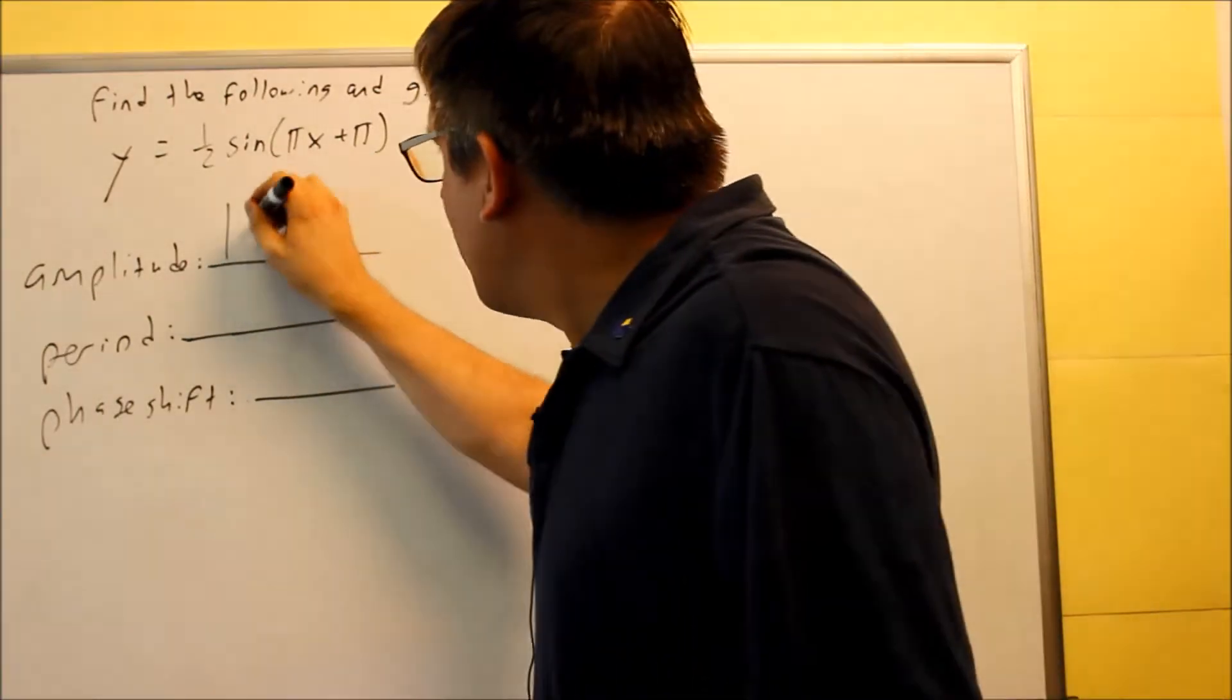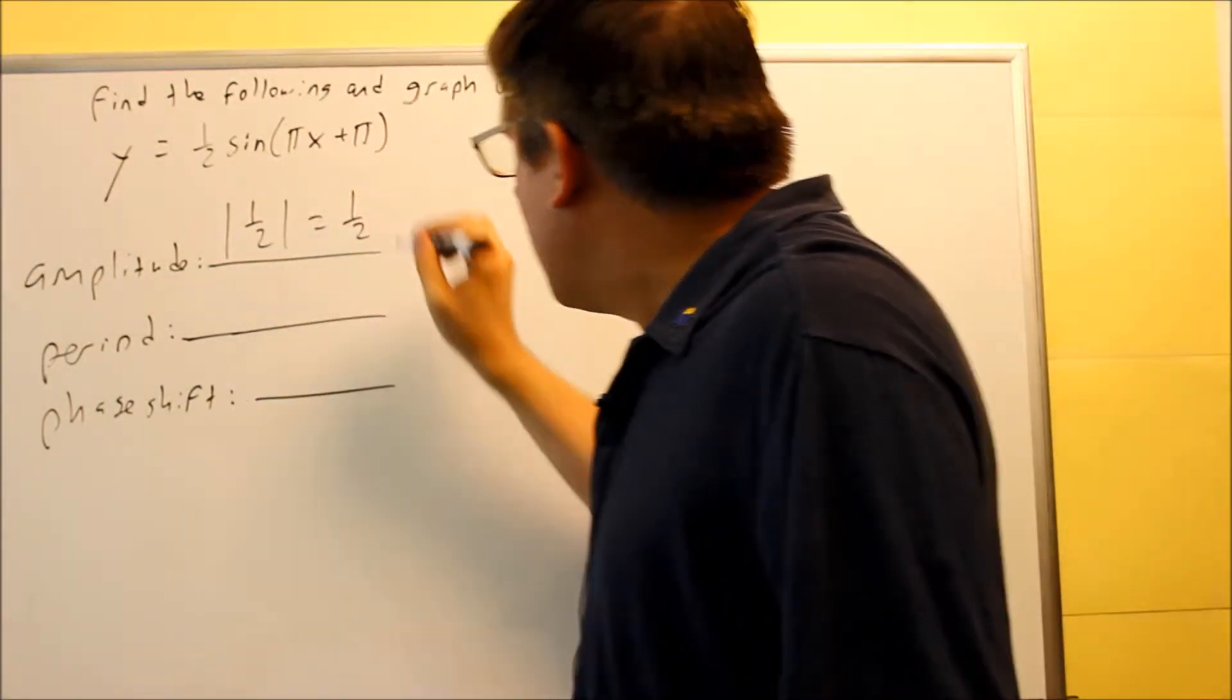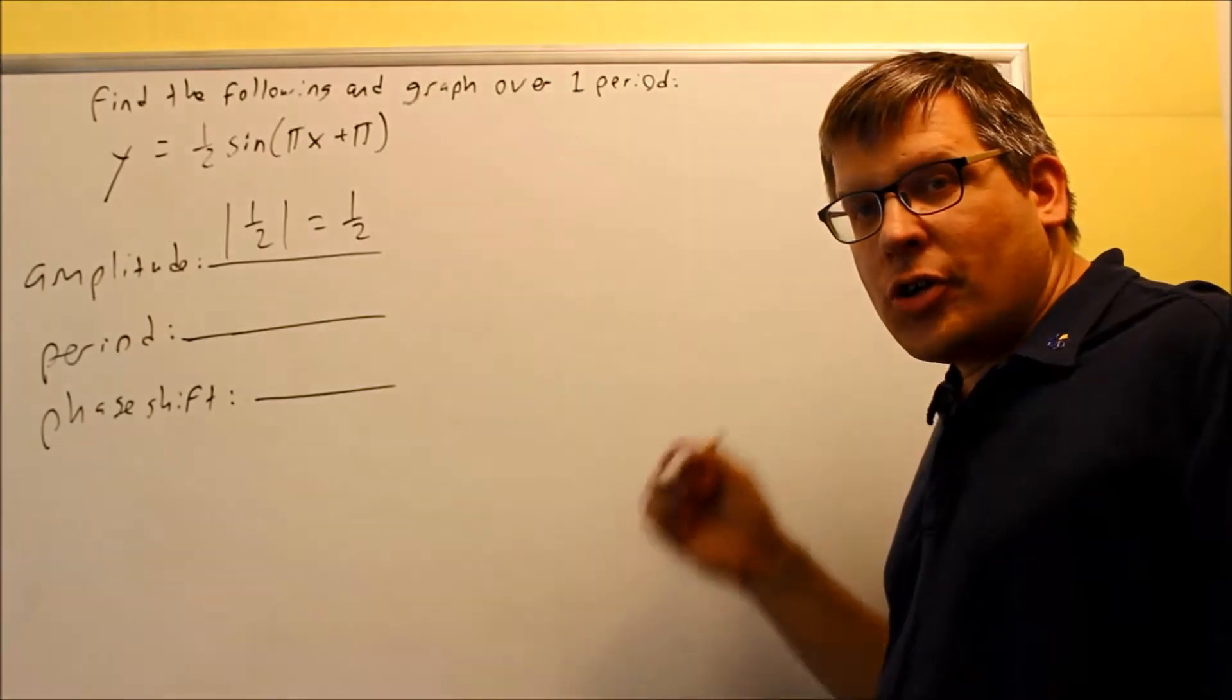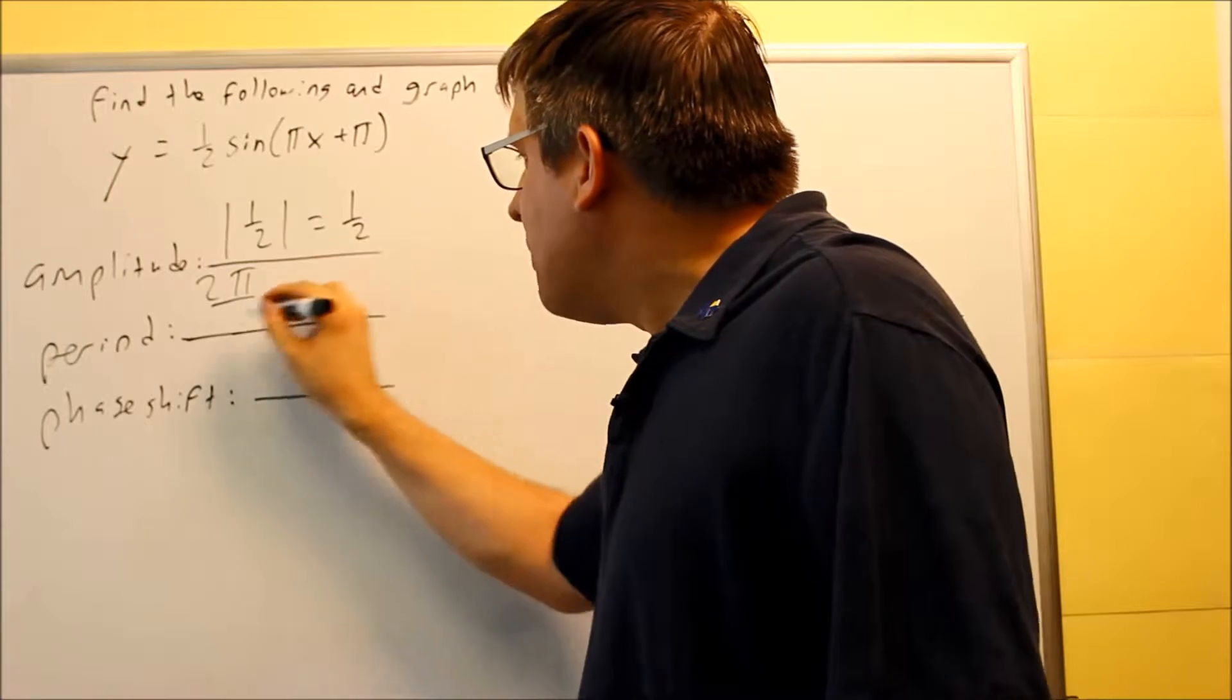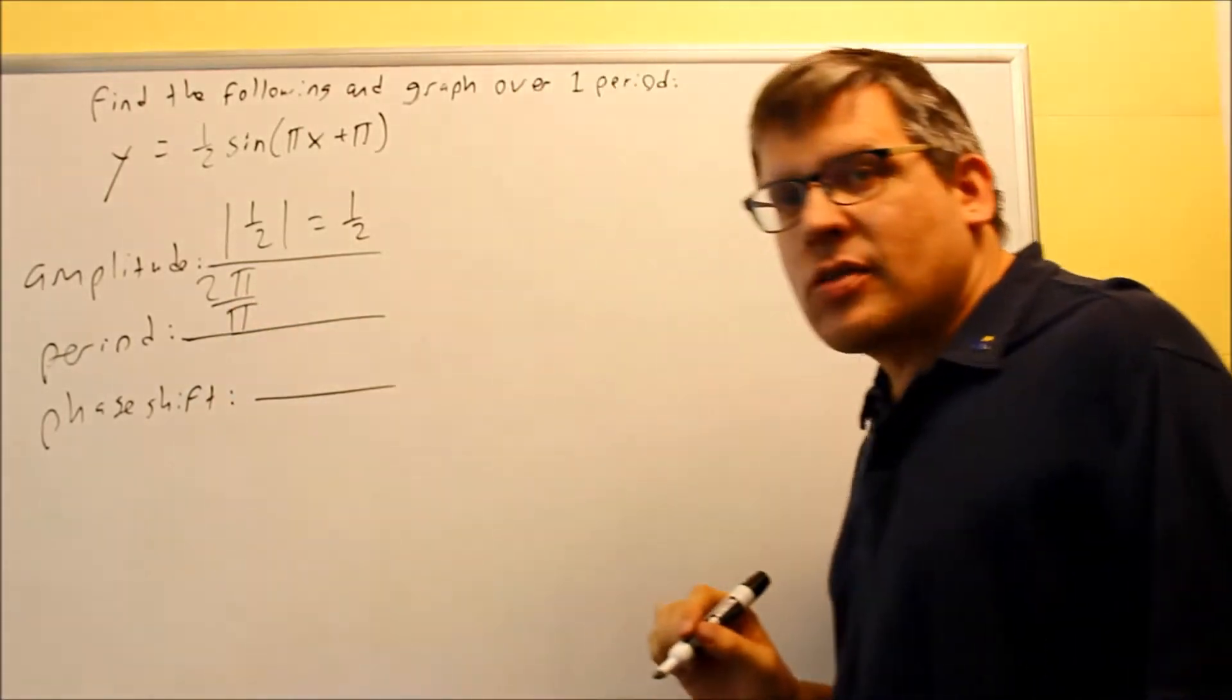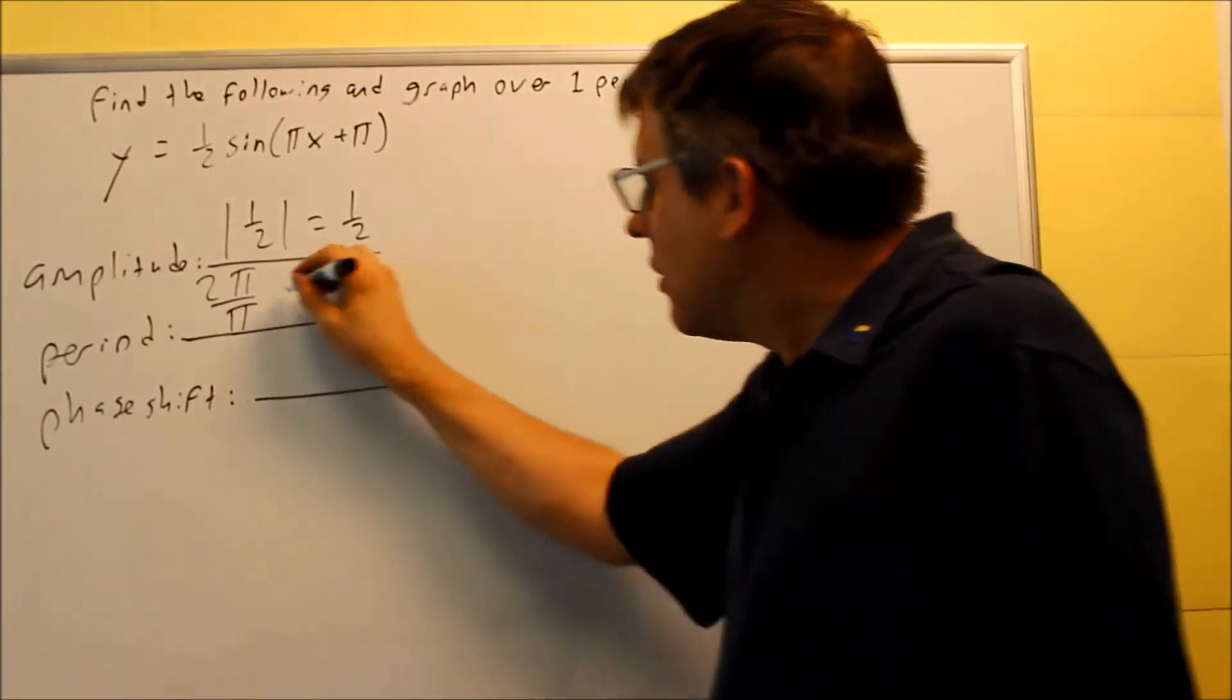Your amplitude is absolute value of 1/2 and you get 1/2. Your period is going to be 2π, the formula is always 2π divided by b, in this case that b is the number in front of the x, it's π, you get 2.